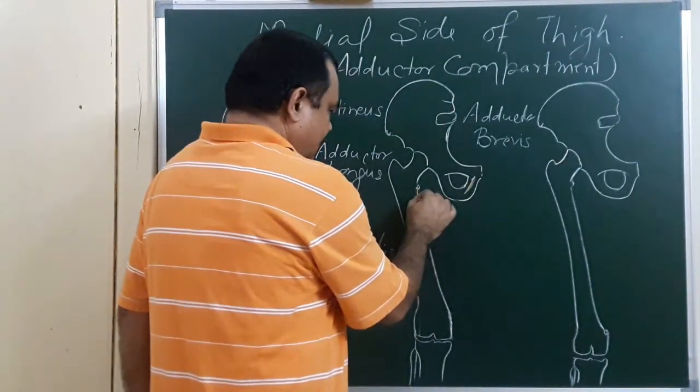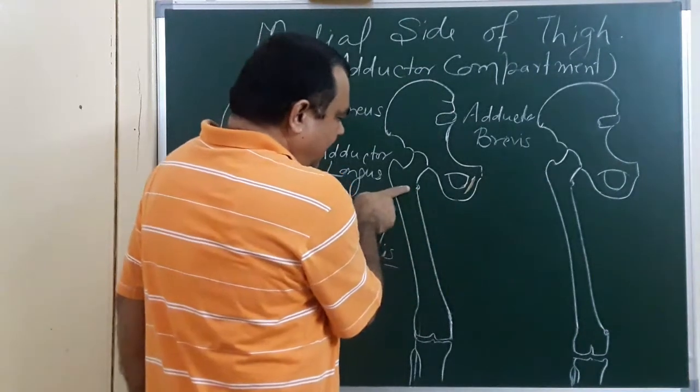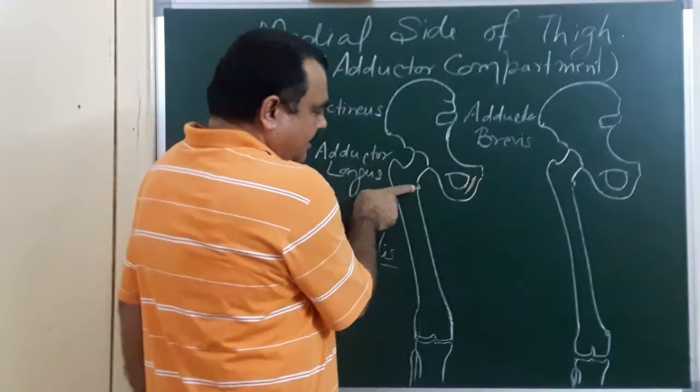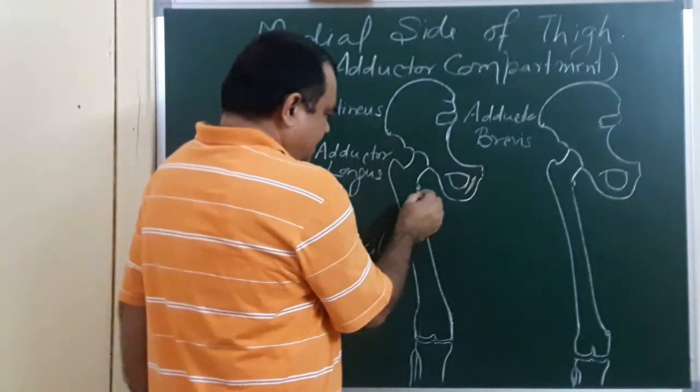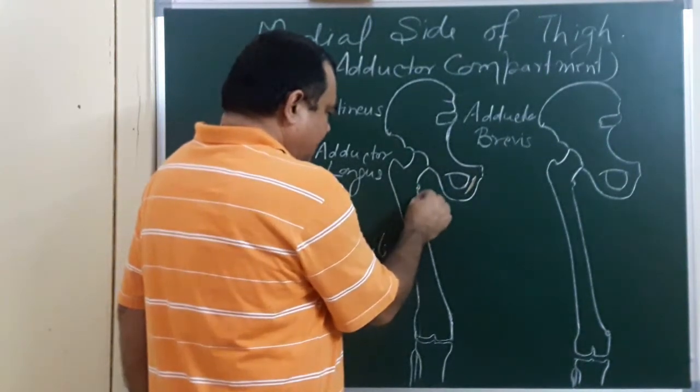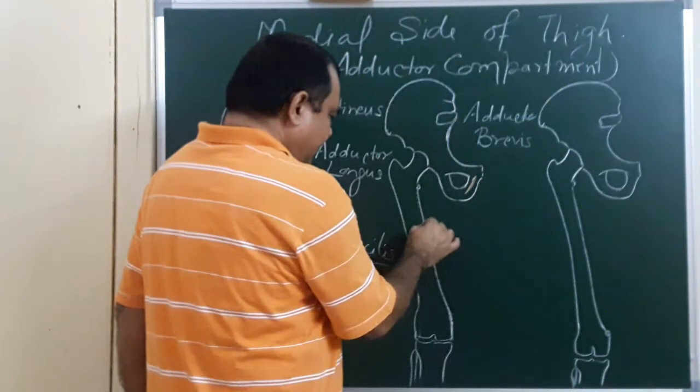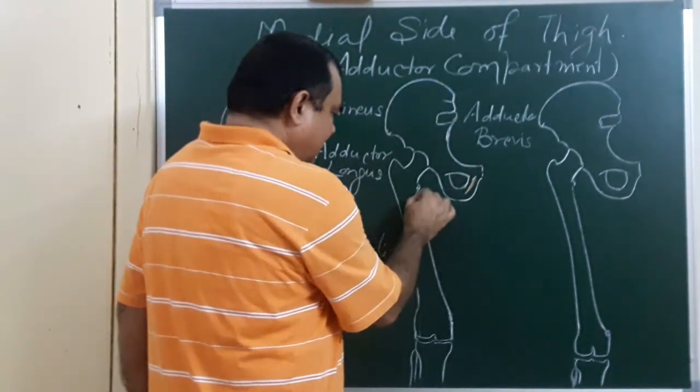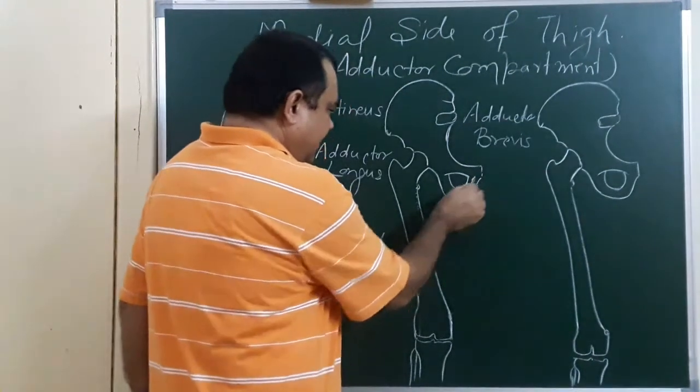And a line from here, lesser trochanter to linea aspera. So it lies here on the upper part of the medial linea aspera, it is inserted over here.